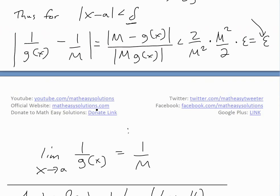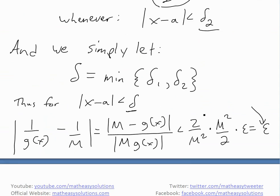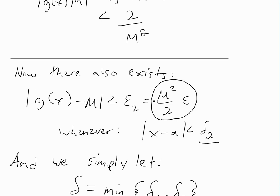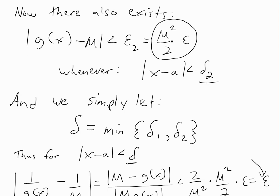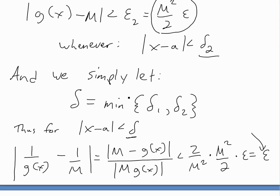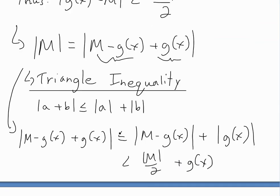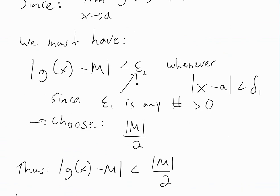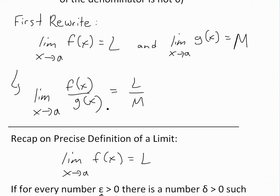That's all for today. Hopefully you've learned from this lengthy proof. Once you get your head around the precise definition and the idea that you can assign whatever value you want to epsilon — as long as you find the corresponding delta — it becomes clear. We chose specific epsilon values that allowed terms to cancel nicely. Download the notes in the Dropbox link below, and stay tuned for another Math Easy Solution.